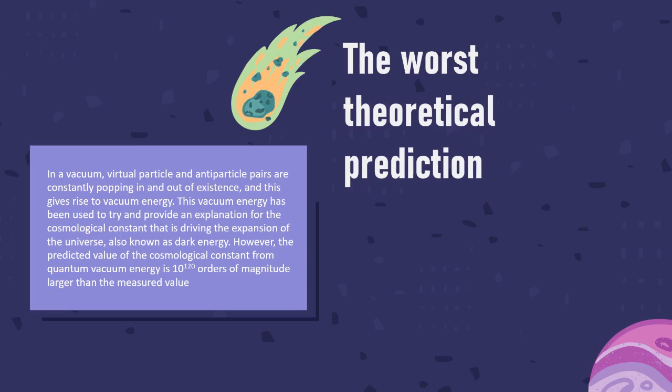In a vacuum, virtual particle and antiparticle pairs are constantly popping in and out of existence, and this gives rise to vacuum energy. This vacuum energy has been used to try and provide an explanation for the cosmological constant that is driving the expansion of the universe, also known as dark energy.